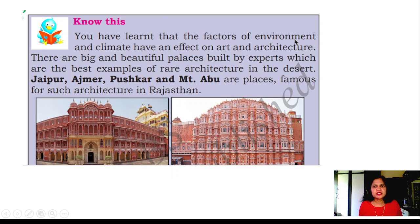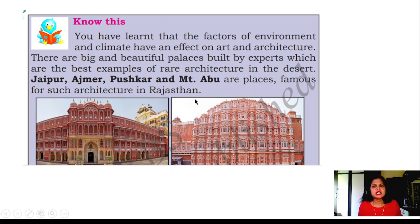You have learned that factors of environment and climate have an effect on art and architecture. There are big and beautiful palaces built by experts, which are the best examples of rare architecture in the desert. Jaipur, Ajmer, Pushkar, and Mount Abu are places famous for such architecture in Rajasthan.